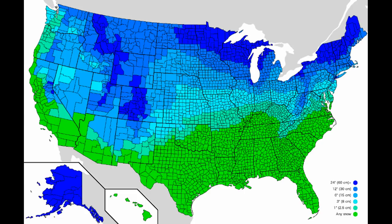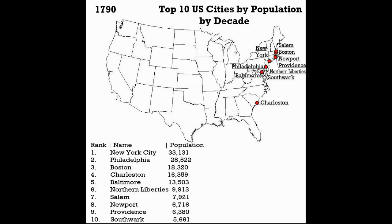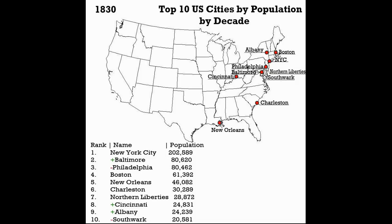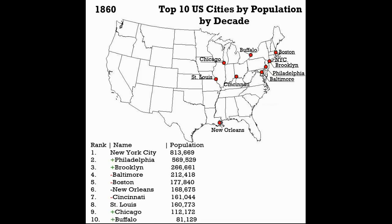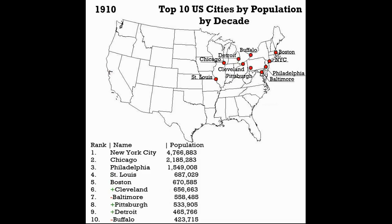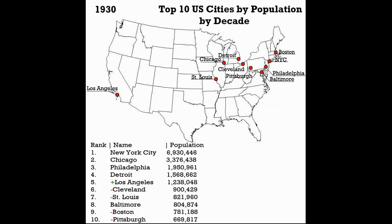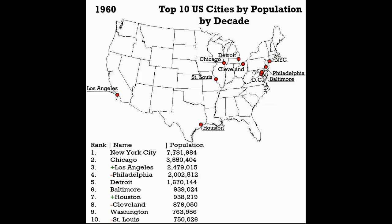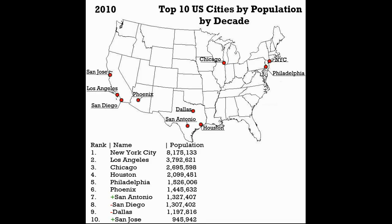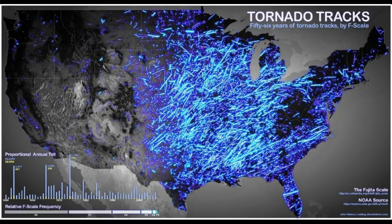This is the amount of snow needed to cancel school. Any snow at all would be the darker green, and then it works up to a large amount of snow when you get to the darker blue. This here is an animated map of U.S. cities by population by decade, starting from 1790 — you see the date in the upper left and the actual population of the cities and where they are on the map. This here is Tornado Tracks — 56 years of tornado tracks by their scale.